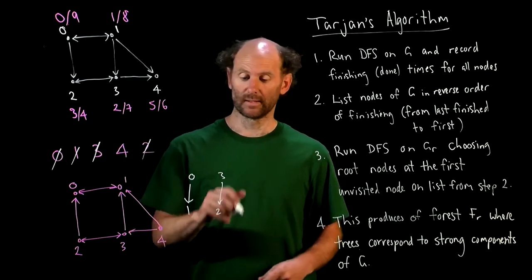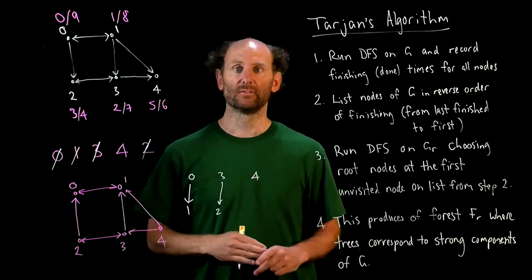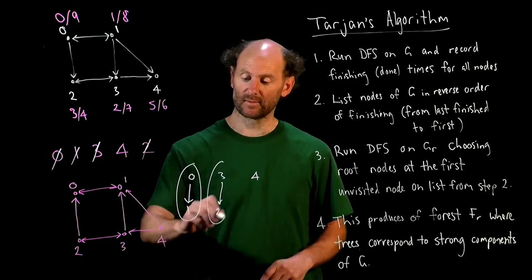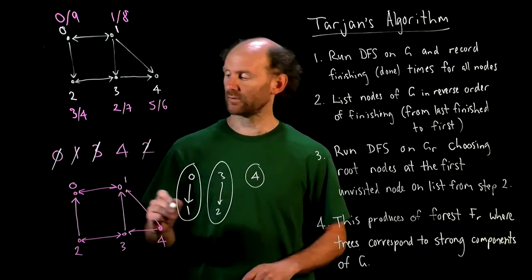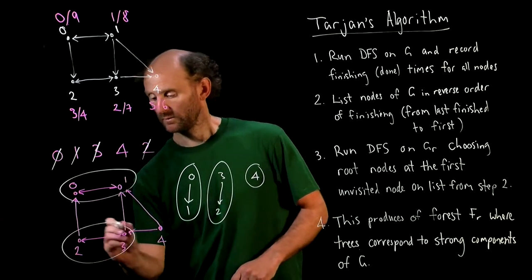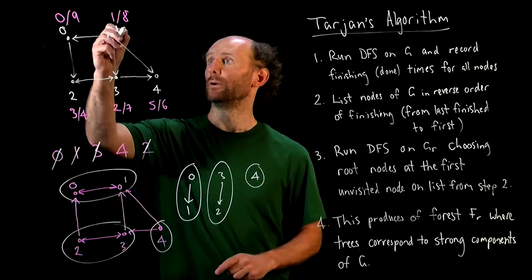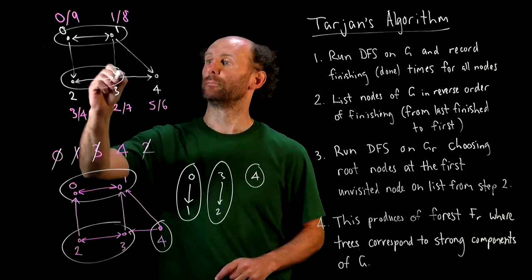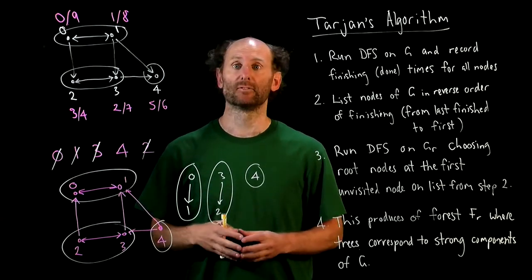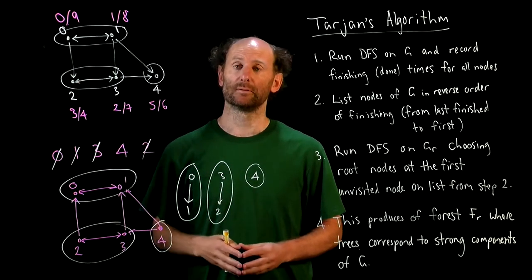4 is next on the list, we'll start our next tree there, and that's as far as we can go. So we've got three trees in our search forest corresponding to 0, 1, 2, 3, and 4, and that translates directly up here as well. And you can check that they are indeed the strong components of this graph as we wanted.